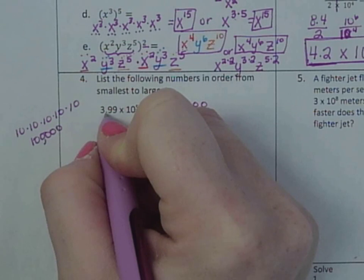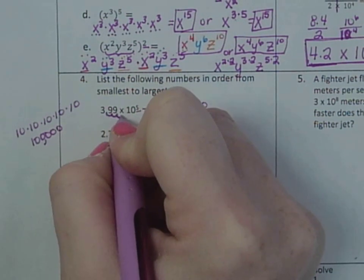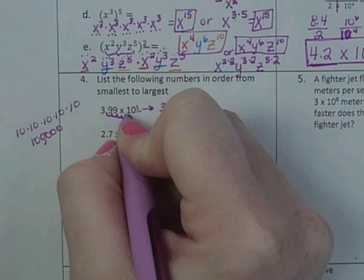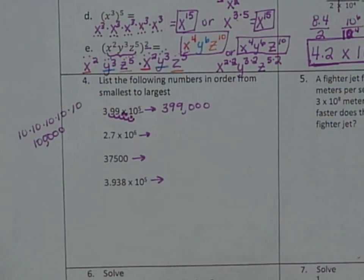Or move the decimal. Notice the decimal started there, so move it 1, 2, 3, 4, 5. Fill with zeros. So notice there are 3 zeros, 9, 9, 3.